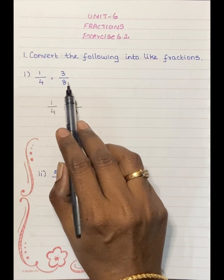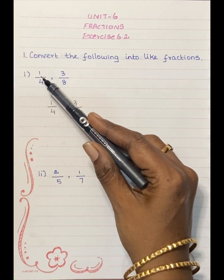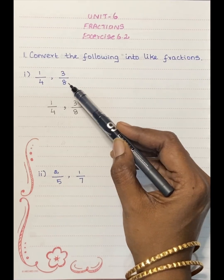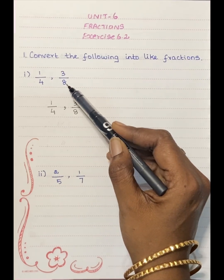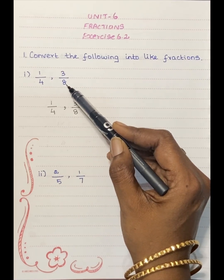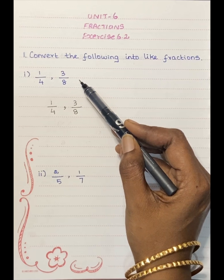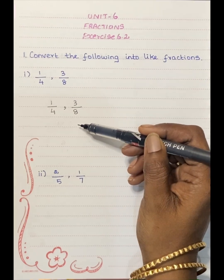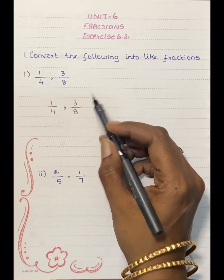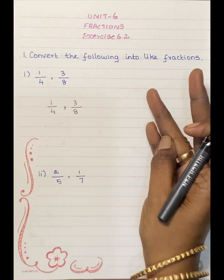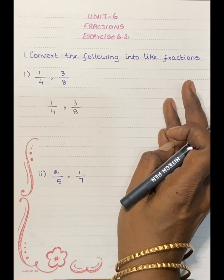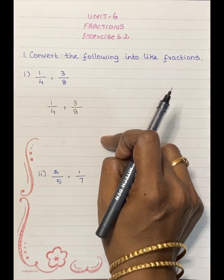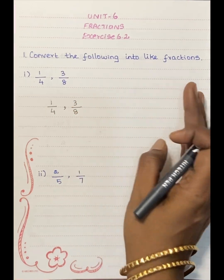If you see the denominator, the denominator is different. That is called unlike fractions — where the denominators are not the same. We can use two methods. We will use the LCM method, not cross multiply. First, we will find the LCM.